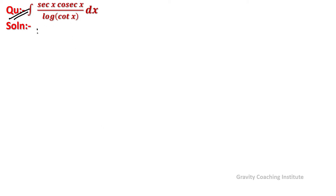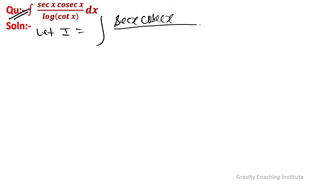Question: integrate sec x into cosec x upon log cot x dx. So first of all let I equal to integration of sec x into cosec x upon log cot x dx.